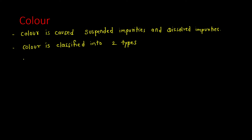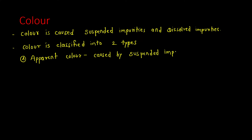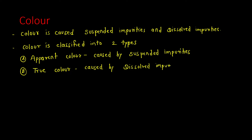This color is classified into two types. The first is called apparent color, which is caused by suspended impurities. The second is called true color, and this true color is caused by dissolved impurities. Remember these two points: apparent color is caused by suspended impurities, and true color is caused by dissolved impurities.